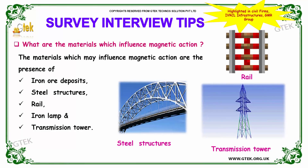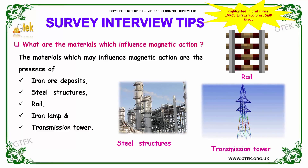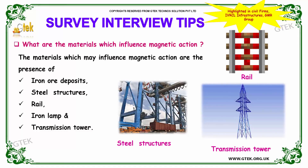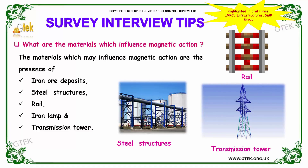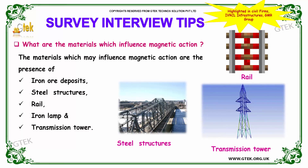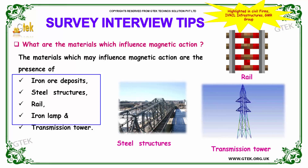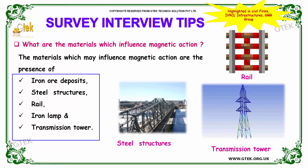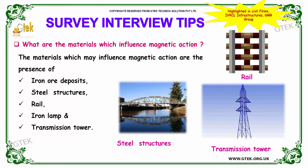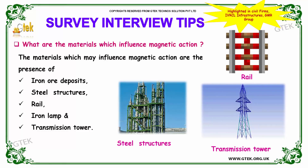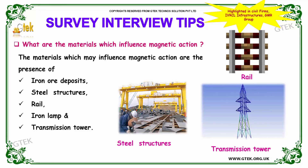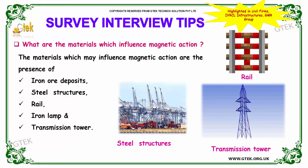Moving on to our next question: what are the materials which influence magnetic action? The materials which may influence magnetic action are those with the presence of iron ore deposits, steel structures, rail, iron lamps, and transmission towers. These are the materials which may influence magnetic action, and they can lead to complications during construction.